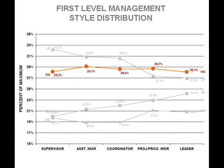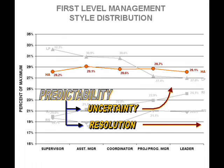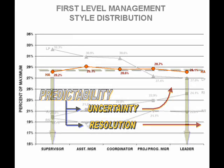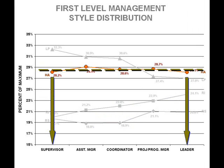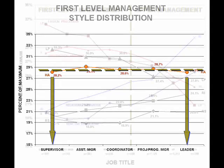First-level management's commitment to the analytical HA style is as flat as a pancake. Why is this style not responding to changes in predictability like the others? The thought-based HA style has tools to handle uncertainty, as long as it is reasonably bounded — for example, what-if analysis or Monte Carlo techniques easily handle uncertainty within a confined range. In addition, everyone at the first level is dealing with near-term issues, so resolution is not a problem. The HA commitment remains stable because uncertainty is bounded and resolution is high. It only begins to drop at the manager level, where tactical demands limit analysis time and uncertainty takes on a more unbounded character.